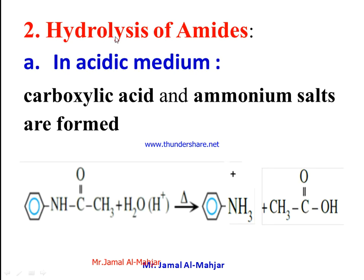The second reaction is the hydrolysis of amides. The first step is in acidic medium, giving us the carboxylic acid and ammonium salt. We write it as H₂O / H⁺, where H⁺ means the proton of the acid. Just break the bond between C=O and NH, then add H₂ to NH to get NH₃.